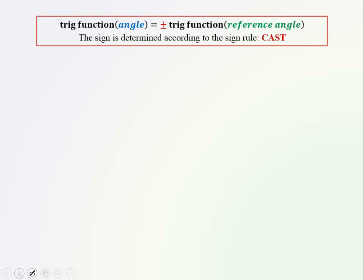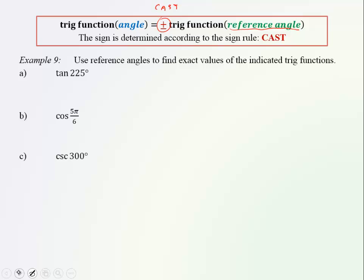Why do we need reference angles? Because if we want to find out the value of any trig function of a certain angle, then this value is equal to the value of that trig function of the reference angle, up to the sign. So it's a lot easier to calculate values of trig functions of an acute angle from the first quadrant. Then by detecting which quadrant our angle is from and using the CAST mnemonic, we can find the sign and complete the question.